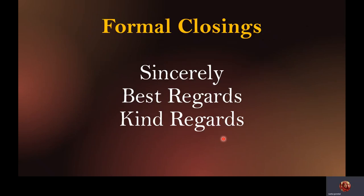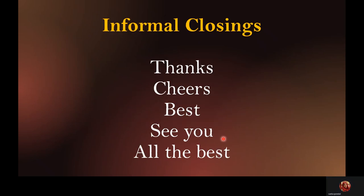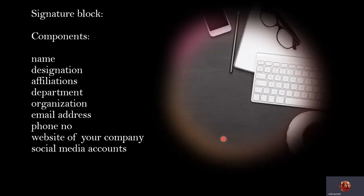For formal closings, use 'Sincerely,' 'Best regards,' or 'Kind regards' — these are the only three closings for formal email writing. For informal emails you can say 'Thanks,' 'Cheers,' 'Best,' 'See you,' or 'All the best.' After the closing, put your signature block, which includes: name, designation, affiliations, department, organization, email address, floor number, website, and social media handles.